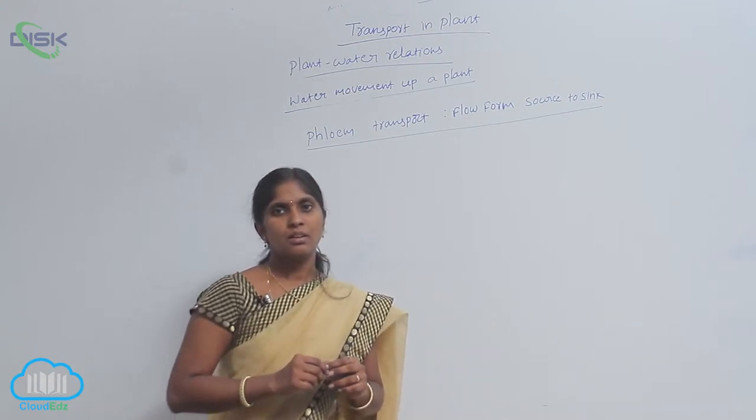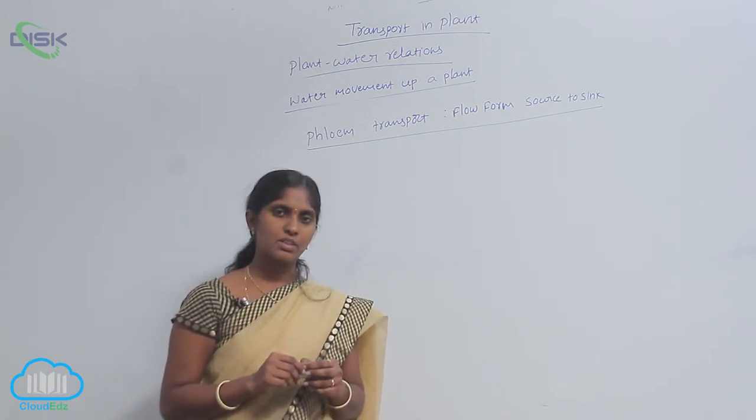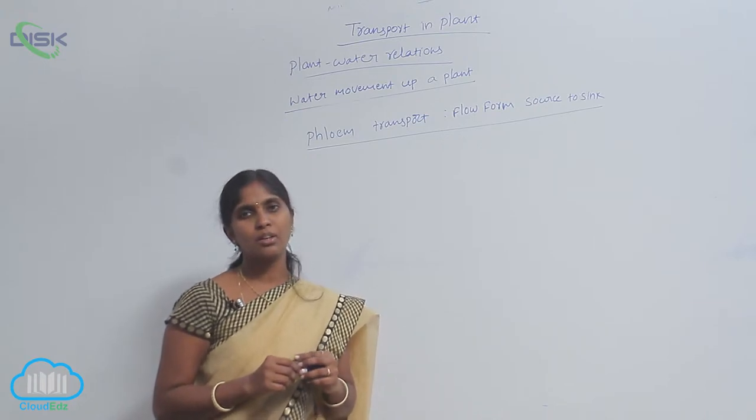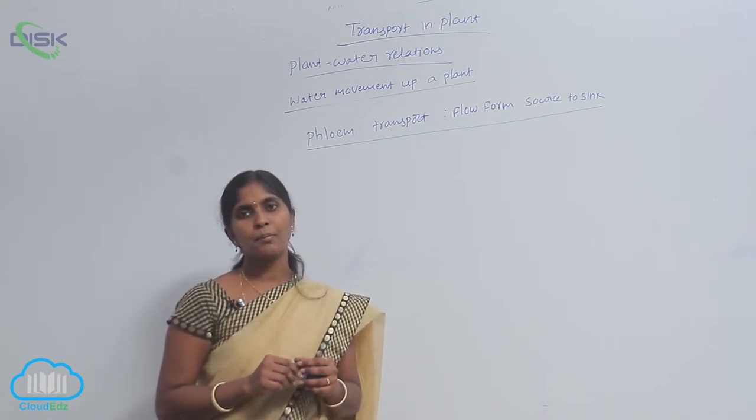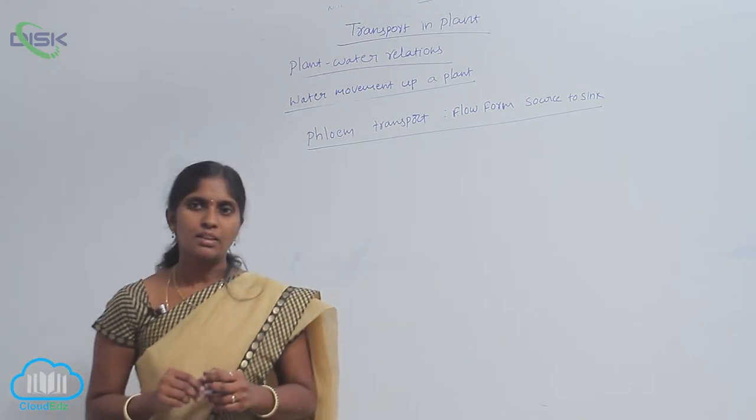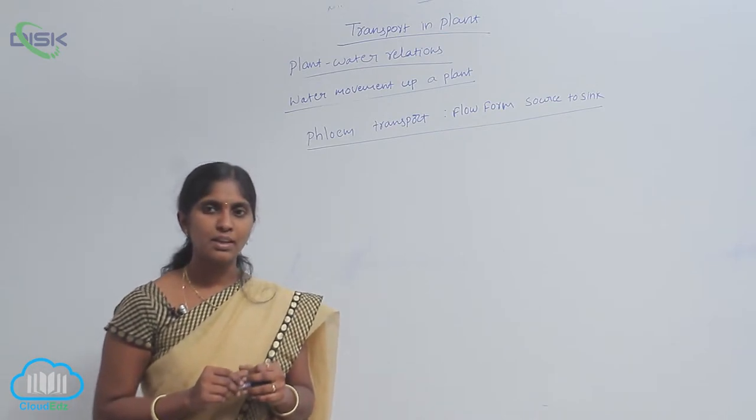Organic substances formed at the leaves undergo bidirectional translocation of organic molecules. They are formed at leaves and translocated to all parts of the plant.